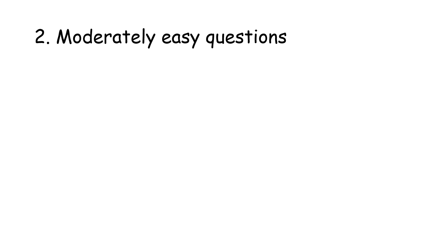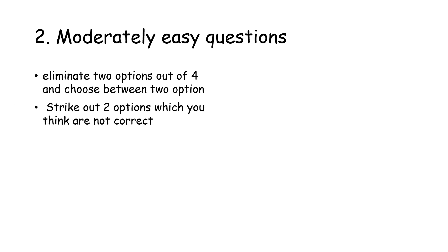Once you have answered all the easy questions, next move on to attempting moderately easy questions. The best way to solve moderately easy questions is by eliminating two options which have the least possibility of being correct. That is, out of the four given options, strike out two options which you think are not the right answers.